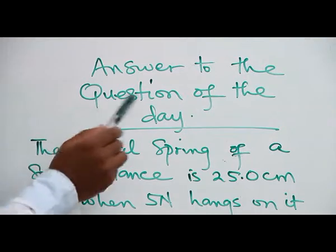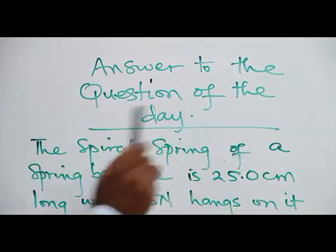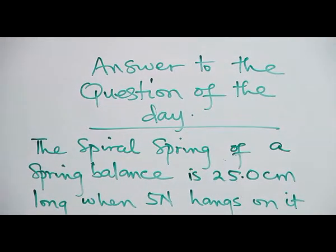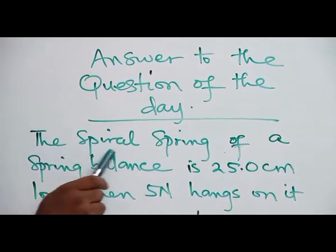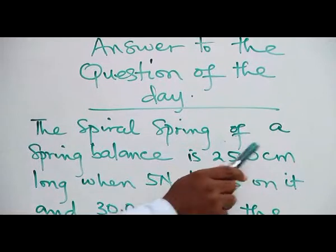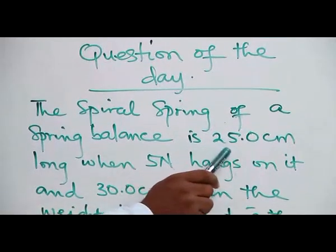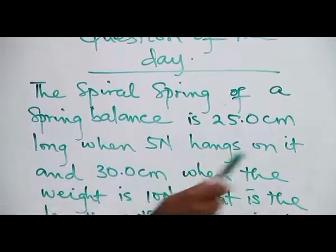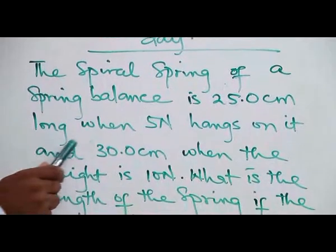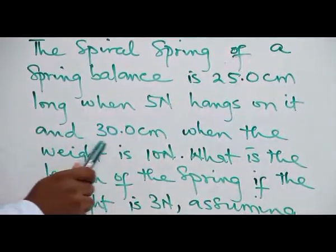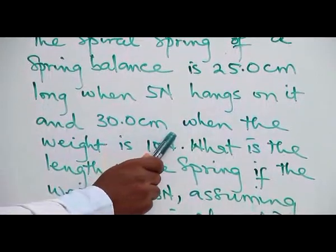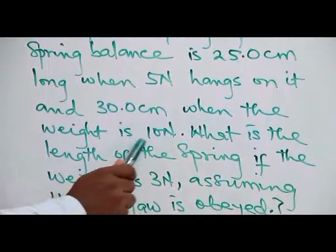Answer to the question of the day. The question of the day is: The spiral spring of a spring balance is 25.0 cm long when 5 N hangs on it and 30.0 cm when the weight is 10 N.